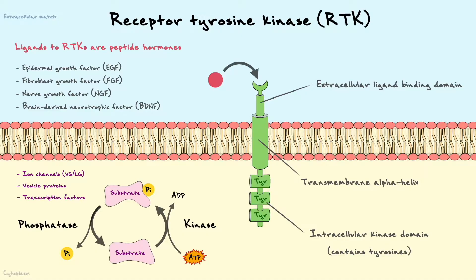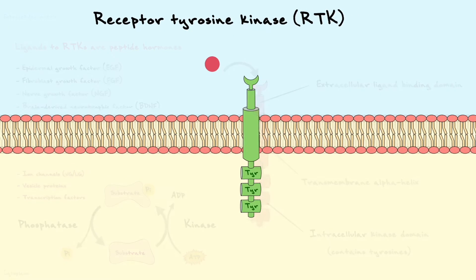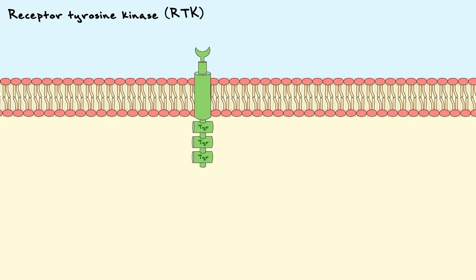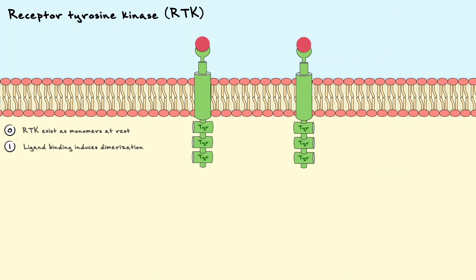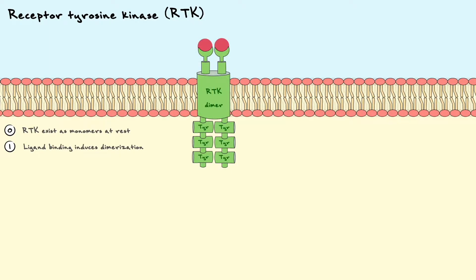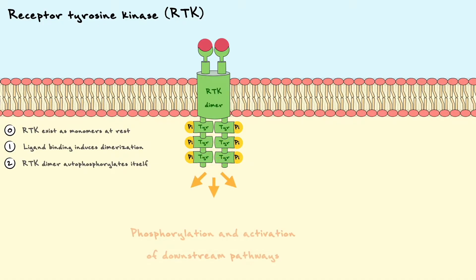Let's see how these receptors get activated. At rest, when the RTK has no ligand bound to it, a good majority of RTKs exist as monomers. When two separate monomeric receptors bind to their respective ligands, it causes dimerization between the two. The formation of the dimer is very important because it will lead each respective RTK to phosphorylate the other RTK until every tyrosine residue has a phosphate group. At this stage, we say that the dimer is fully phosphorylated and fully activated. Now that the RTK is active, it will act as a kinase to other substrates and activate multiple downstream pathways.